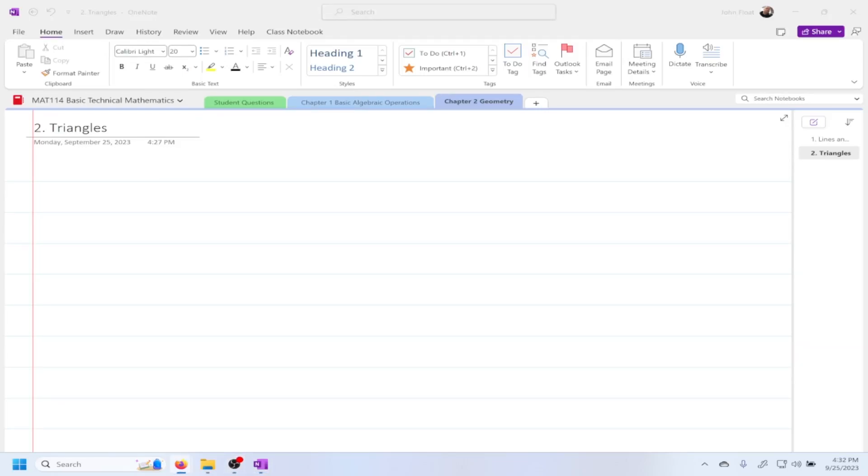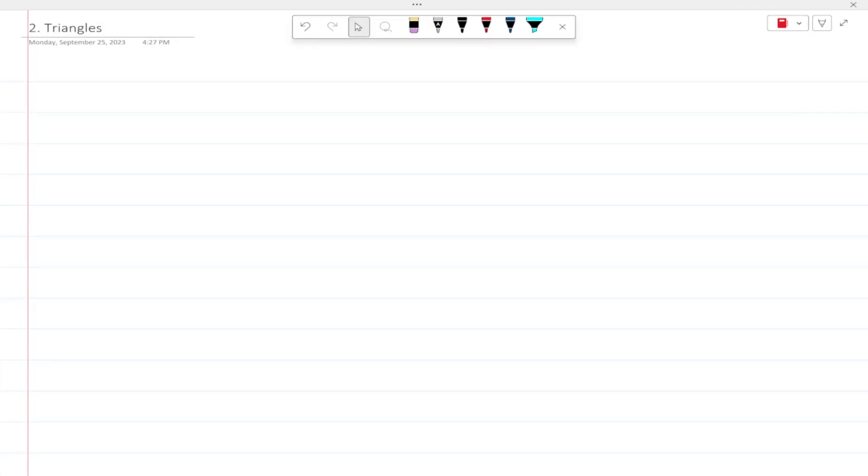The next section in Chapter 2 is going to be about triangles. This should be a relatively short section because it only goes about triangles, which is really nice. The first thing I want us to go over is what are the different types of triangles we can have.